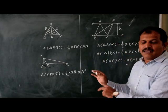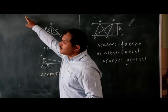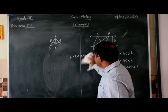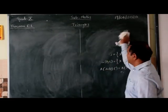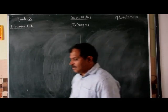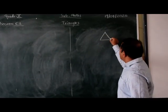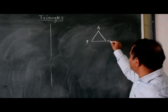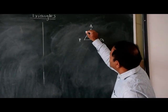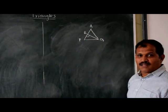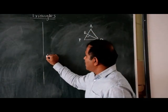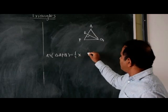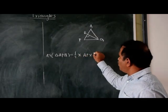These things are important to understand Theorem 6.1. Now let us go to Theorem 6.1. Consider triangle APQ. We can draw an altitude, say QN, from Q to AP. Therefore, area of triangle APQ equals half into AP into QN.